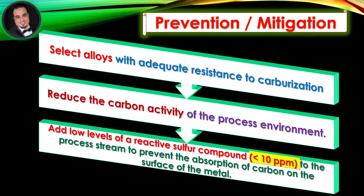Prevention and Mitigation: Select alloys with adequate resistance to carburization. Reduce the carbon activity of the process environment. Add low levels of a reactive sulfur compound — typically less than 10 parts per million — to the process stream to prevent the absorption of carbon on the surface of the metal.